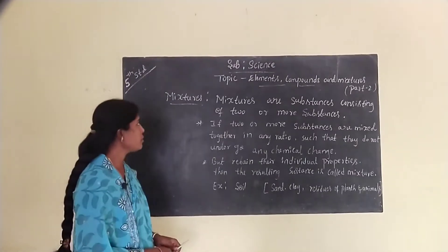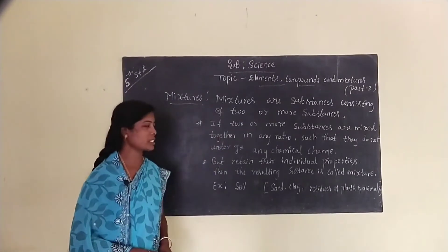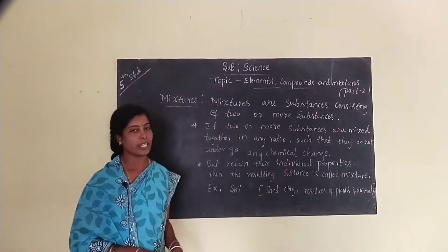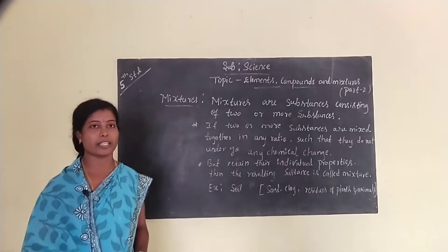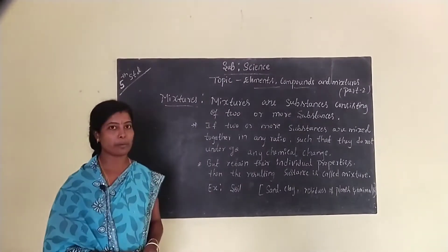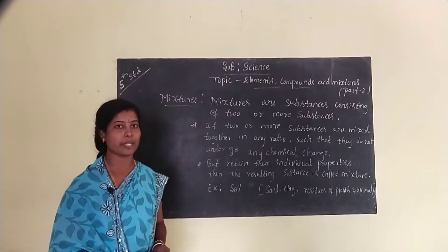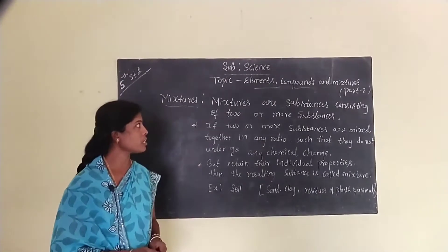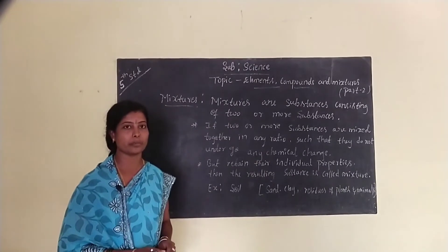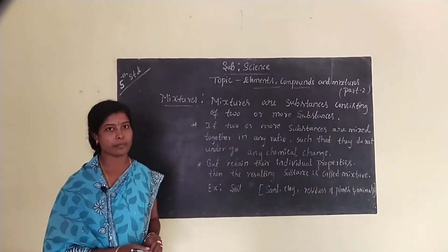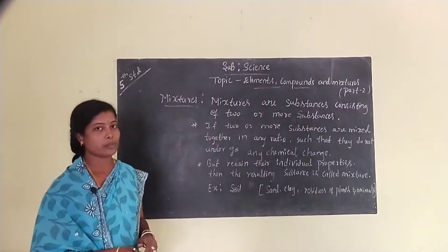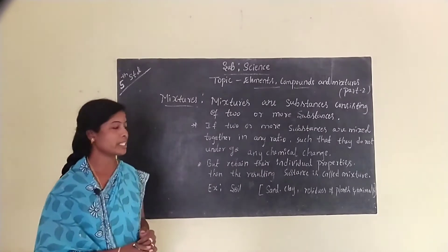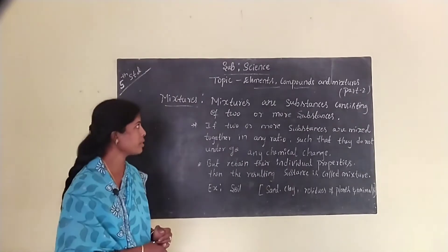Hi dear children, today I will continue the same topic: elements, compounds and mixtures. In last class we already learned about elements and compounds. Elements consist of same types of atoms. For example, oxygen and hydrogen are examples of elements. Compounds consist of two or more types of elements combined chemically to form compounds. For example, water is a compound.